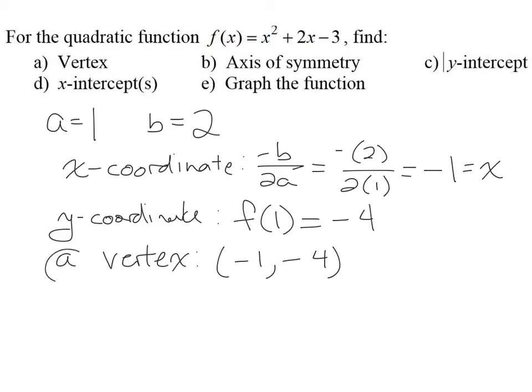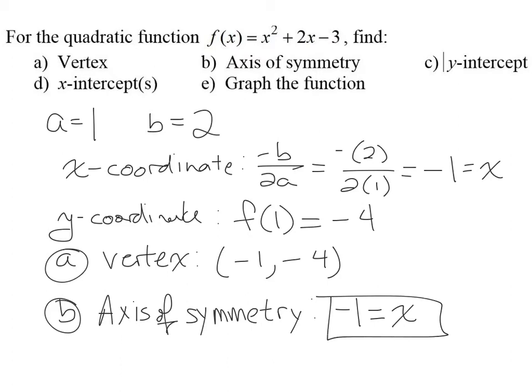So there's your part A. Part B uses this information. The axis of symmetry relies on the x-coordinate of the vertex. So the x-coordinate of the vertex is negative 1. And since the axis of symmetry is a vertical line, we need to set that equal to x for that entire equation to be our answer.